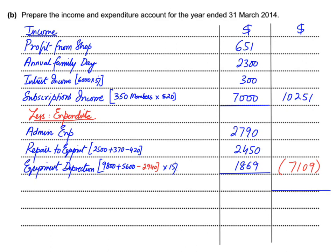After deducting all expenditure from income, the final answer in an income and expenditure account is called a surplus (not profit) if income exceeds expenditure, and a deficit (not loss) if expenditure exceeds income. You can also write 'surplus of income over expenditure' in full.